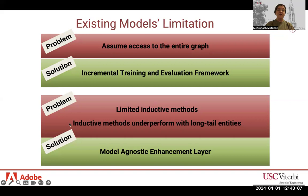In our work, we present a model-agnostic enhancement layer that can be augmented to any GNN-based method and can improve link prediction performance in general and for long-tail entities.